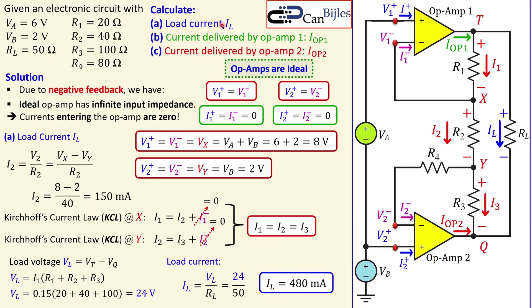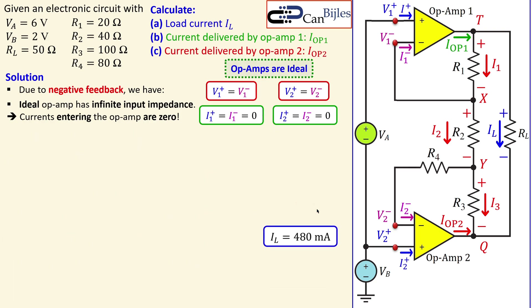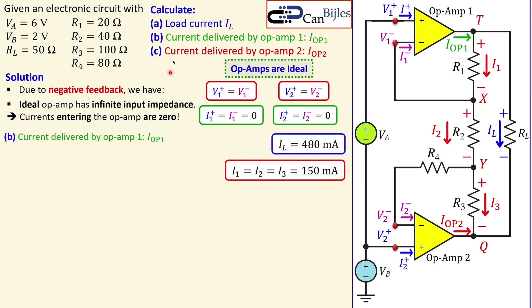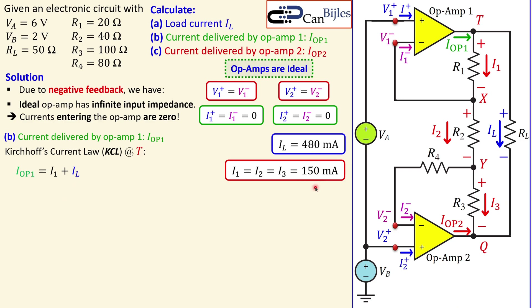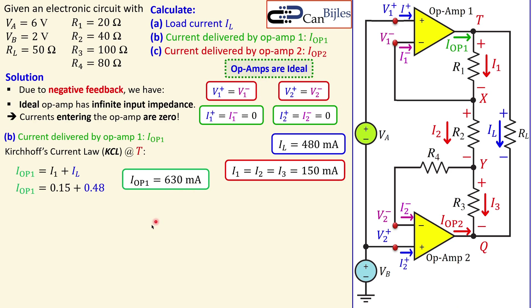Now for the current delivered by op-amp one, Iop1. Setting up KCL at node T: the current leaving op-amp one produces both I1 and IL. So Iop1 = I1 + IL. We know I1 = 0.15 A and IL = 0.48 A, so Iop1 = 0.15 + 0.48 = 0.63 A, or 630 mA.